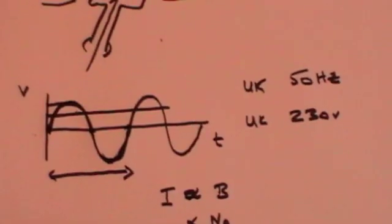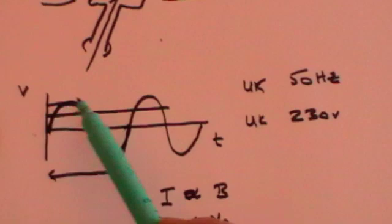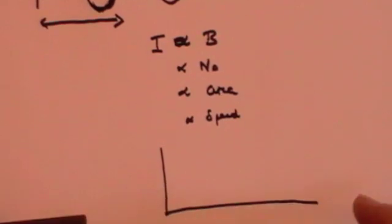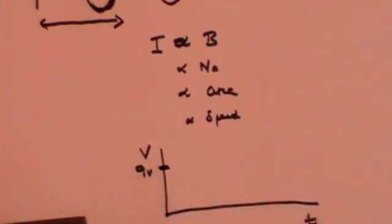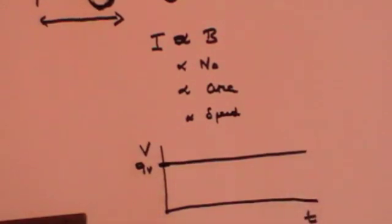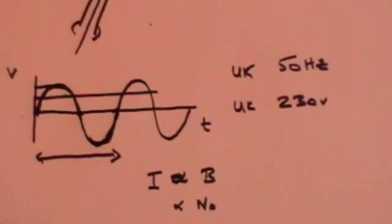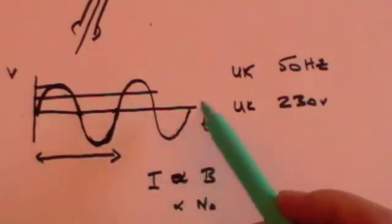I said that this was alternating current, where the voltage is constantly changing. If you contrast that to direct current — if I drew a voltage-against-time chart and you take, say, a nine-volt battery and put that on an oscilloscope, what you would get is just a straight line constantly at nine volts. A direct current voltage does not change, whereas an AC voltage is constantly oscillating.